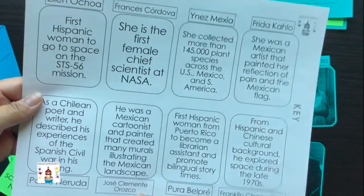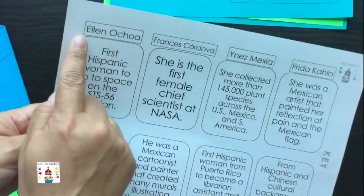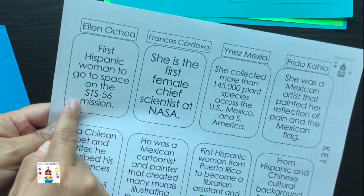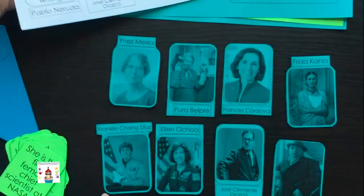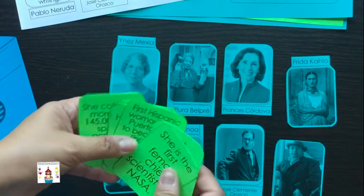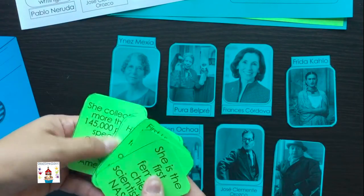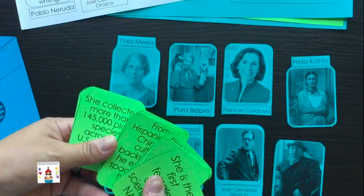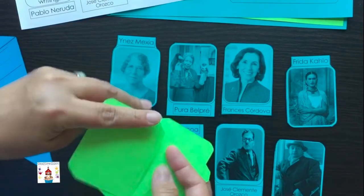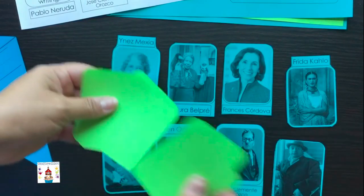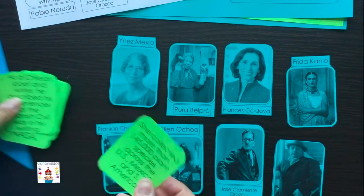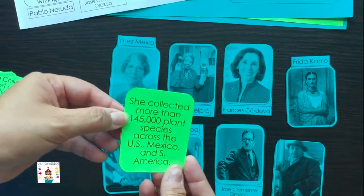What I have is a key that's included with the free workbook. It goes with the name and goes with the accomplishment that each Hispanic figure had. So one of the things you can do is randomly put those to the side, cut the cards, and flip them over like this, all mixed up.